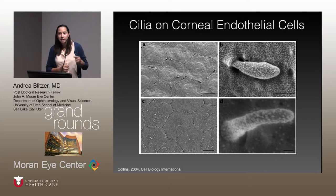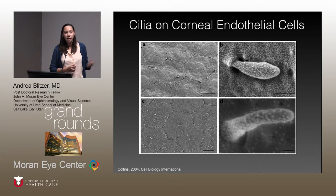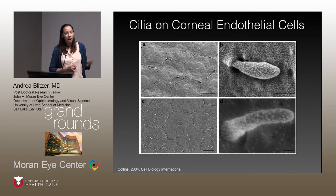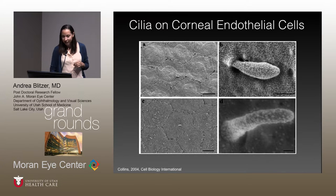He was somewhat misguided because the endothelium of the cornea is not a true endothelium — it's actually an epithelial cell, and cilia on epithelial cells are quite common. But regardless, that's kind of why we got started in this.